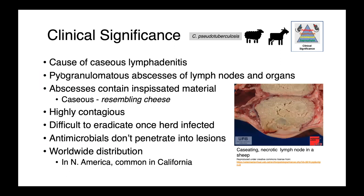Corynebacterium pseudotuberculosis is the cause of caseous lymphadenitis. Caseating lesions are a form of coagulation necrosis where we have caseous — cheese-like — material at the center of the abscess. These abscesses are pyogranulomatous and can be found in the lymph nodes and abdominal viscera. The material within these lymph nodes becomes thickened, inspissated, and dried out. It's poorly vascularized, so it's difficult to achieve adequate antimicrobial concentrations in the center of the abscess. These infections are highly contagious and difficult to eradicate once a herd is infected. Caseous lymphadenitis has a worldwide distribution; in North America, the region with the highest incidence is apparently California.